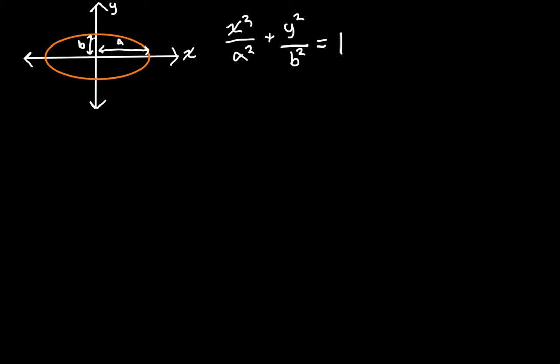Right off the bat we can tell that this isn't a normal function because it doesn't pass a vertical line test. So in finding the slope of a line tangent to this curve — that is, taking the derivative to find dy/dx — what we're probably going to need to use is implicit differentiation.